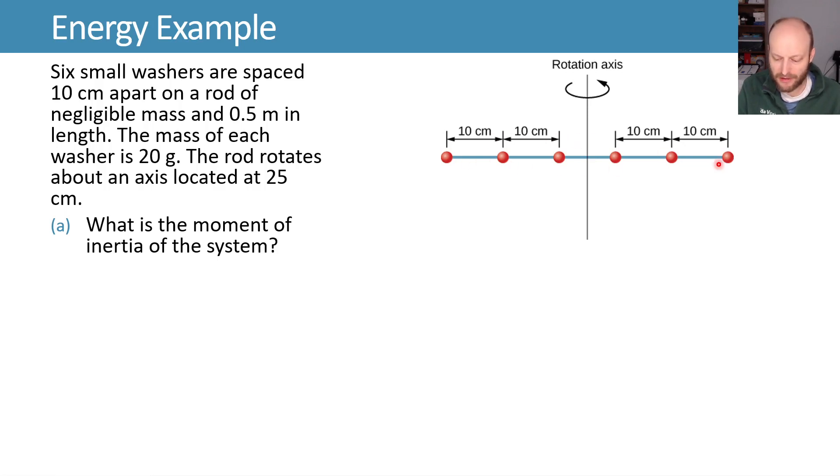Let's consider six washers that are spaced on this thin rod equidistant apart. The rod itself is 0.5 meters in length where we have the mass of each washer being 20 grams. Let's write that down: 20 grams or 0.02 kilograms.